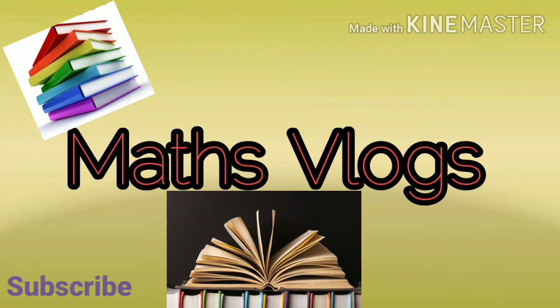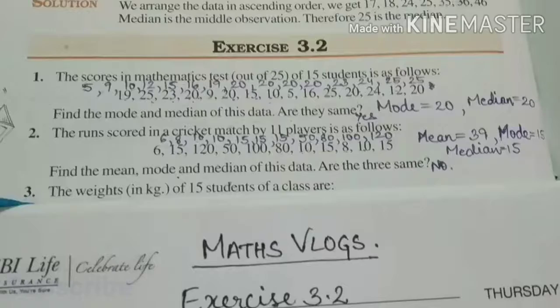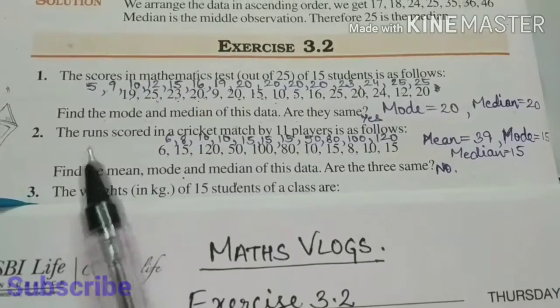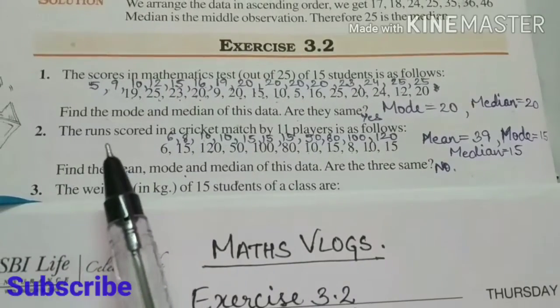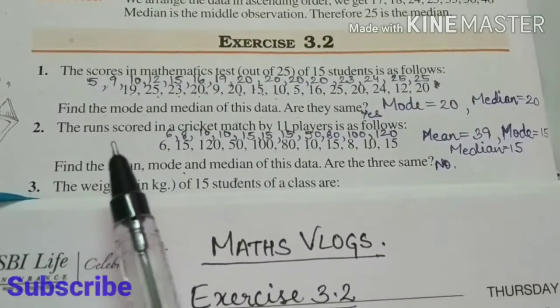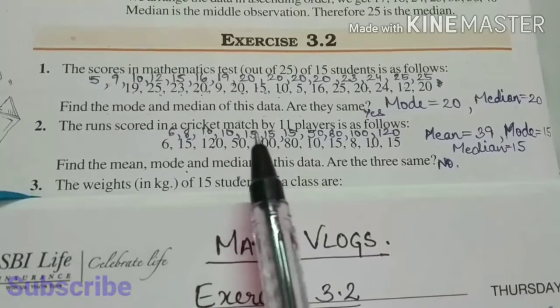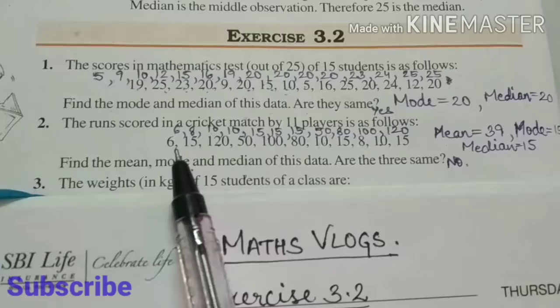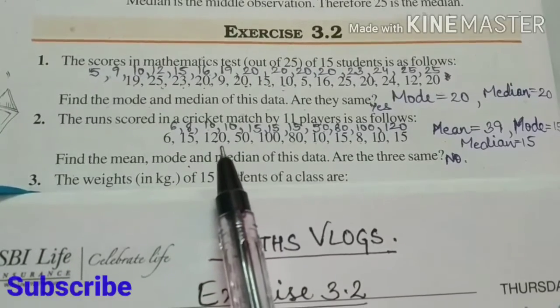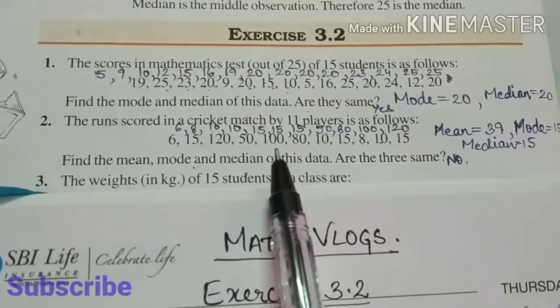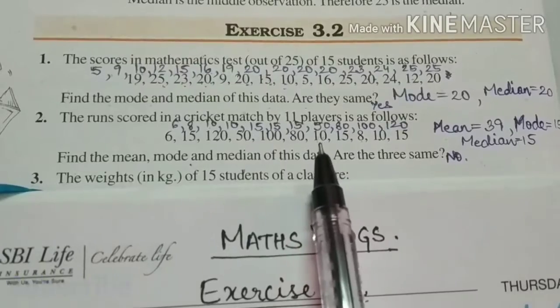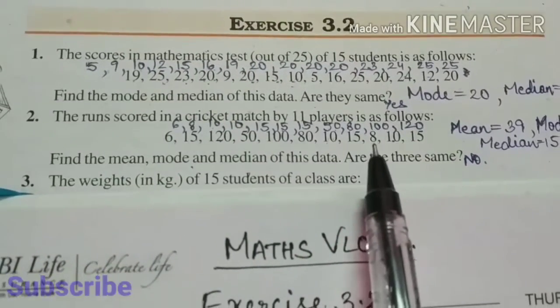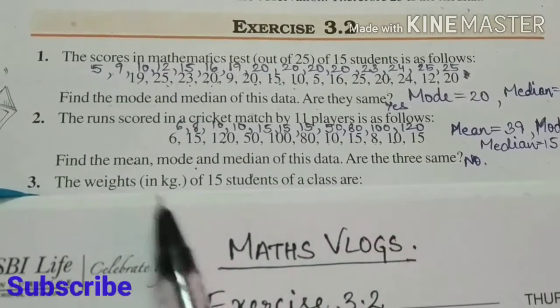Hello friends, welcome to Maths Vlogs. Today let us solve question number 2, Exercise 3.2. The runs scored in a cricket match by 11 players is as follows: 6, 15, 120, 50, 100, 80, 10, 15, 8, 10, 15.